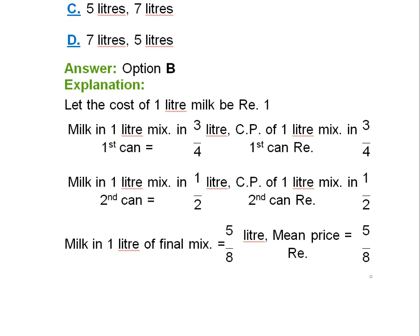Milk in first liter in second can is 1/2 liter. Similarly the CP for second can would be 1/2. Milk in one liter for final mix is 5/8, and similarly the mean price is 5/8.